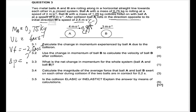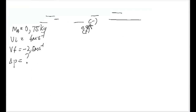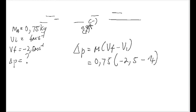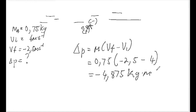To calculate the change in p, we use: change in p equals m times (vf minus vi). Our mass is 0.75 kg, our final velocity is negative 2.5, and our initial velocity is four. Punching that into the calculator gives us negative 4.875 kg·m/s.